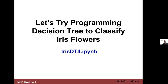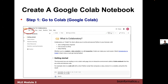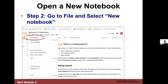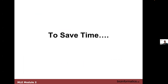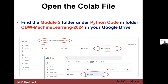We can start doing some Python programming to classify iris flowers. Go to Colab, open it up, create a new notebook, and call it iris_decision_tree_4.python. The decision tree code has actually been written for you and it's in module 2. Please try to find that decision tree module and open the file.